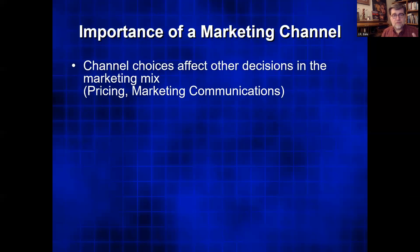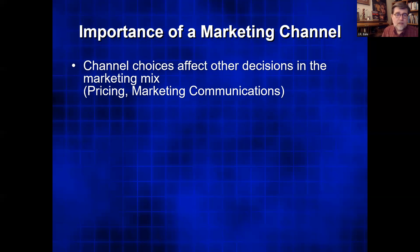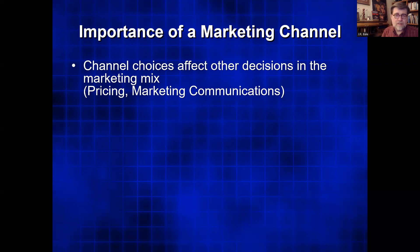Your channel choices in terms of distribution affect other decisions you're going to make in the marketing mix, such as pricing or marketing communications. For instance, if you're going to distribute through Walmart, your prices have to be lower. If you're going to distribute through Nordstrom's, your prices will have to be on the higher side. It also affects your communications, your promotion, how you promote it and where you send customers to find the product, which channels to send them to.